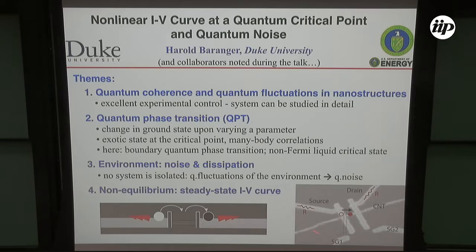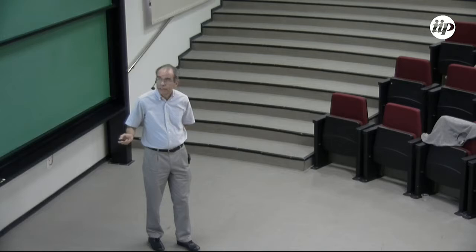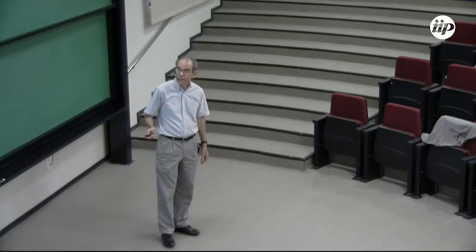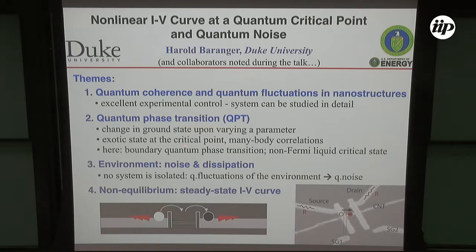The advantage of this system is that there's really excellent experimental control so that the phenomena can be studied in detail. Quantum phase transitions will play an important role in my story. A quantum phase transition is an abrupt change in the ground state of a system upon changing some parameter. At the point of the transition, at the critical point, you have a competition between the two possible ground states, which gives rise often to interesting many-body correlations.